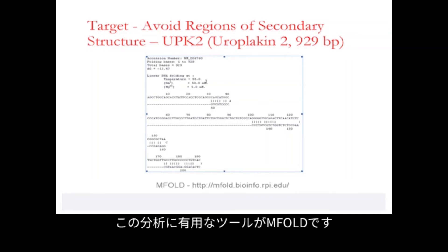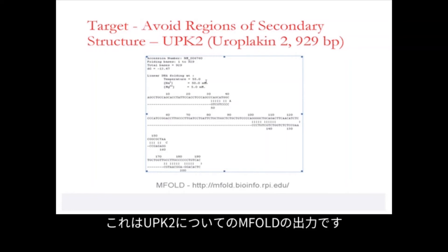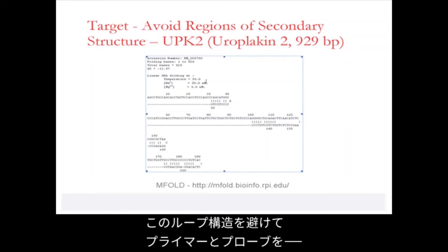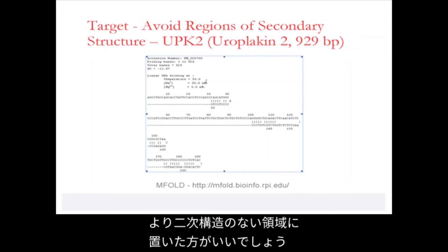One extremely useful tool for carrying out such an analysis is mFold, which you can find at the link shown at the bottom of the slide. As you can see in this picture taken from the mFold output for UPK2, there are loops between bases from about 30 to 50, 100 to 140, and 180 to 200. You will want to avoid placing your primers and probes so they wrap around these looped regions, but rather try to find regions in the gene that are more linear.